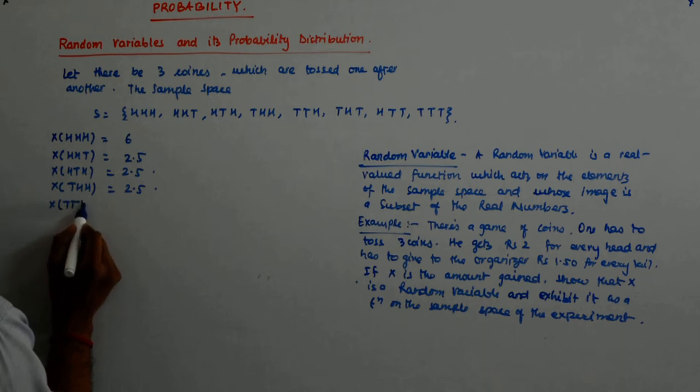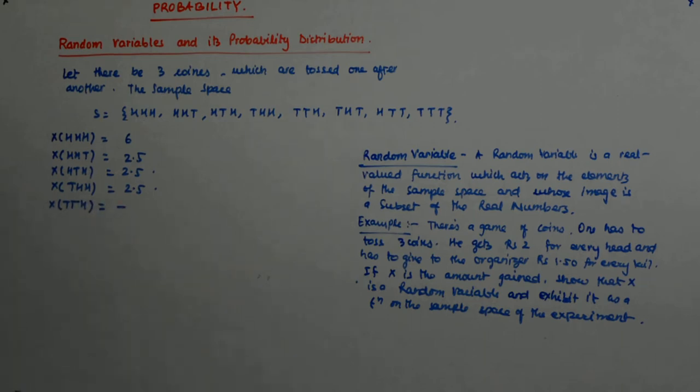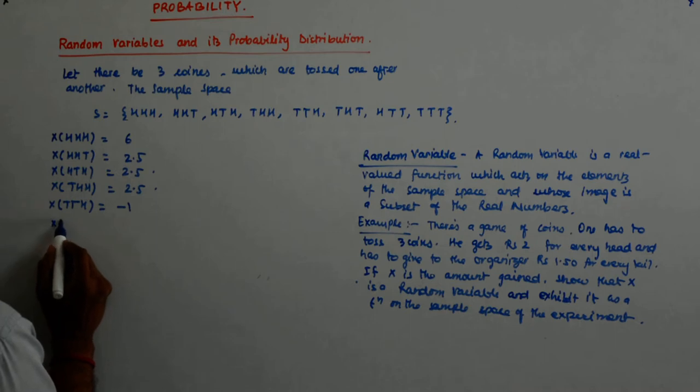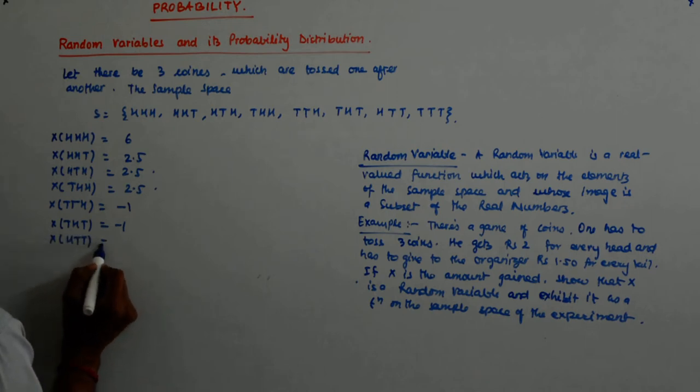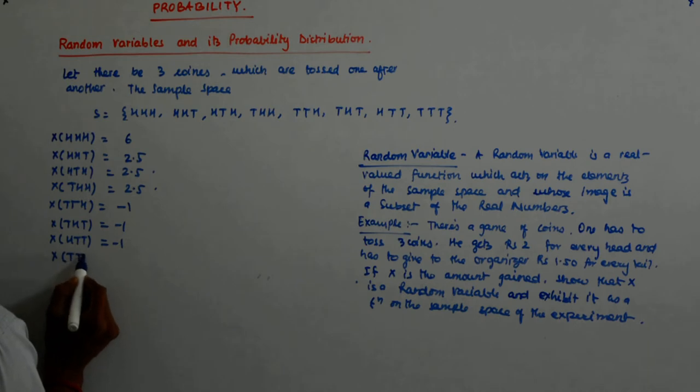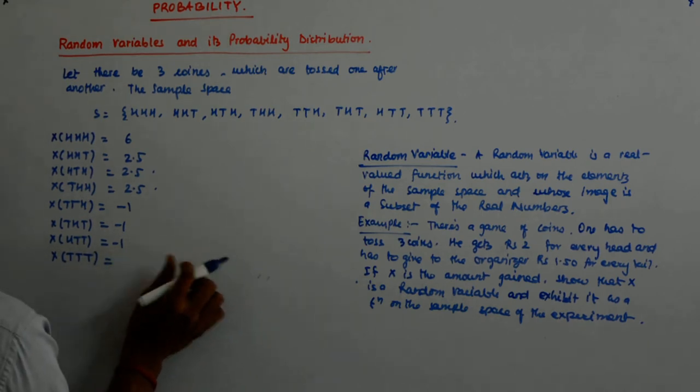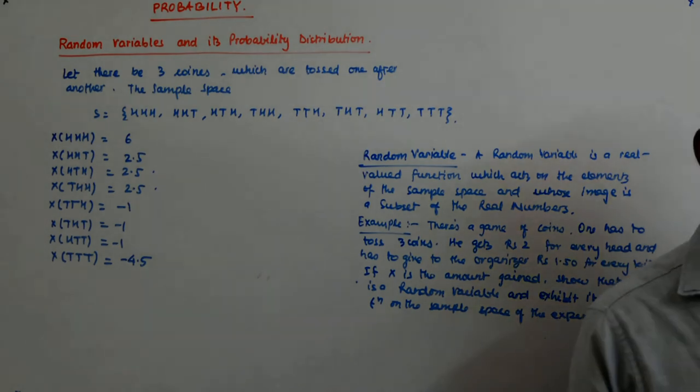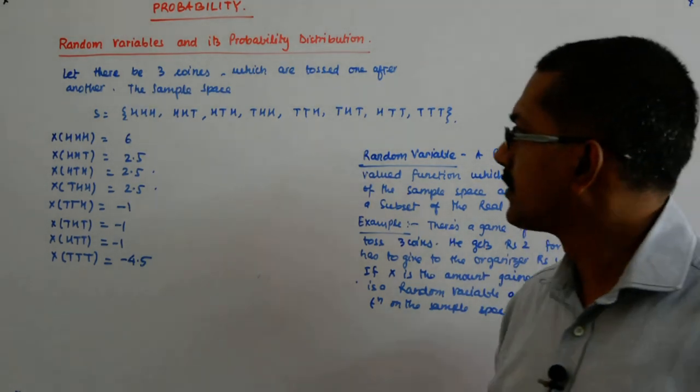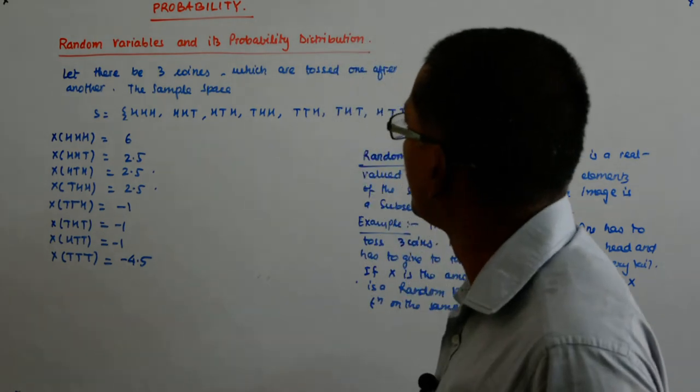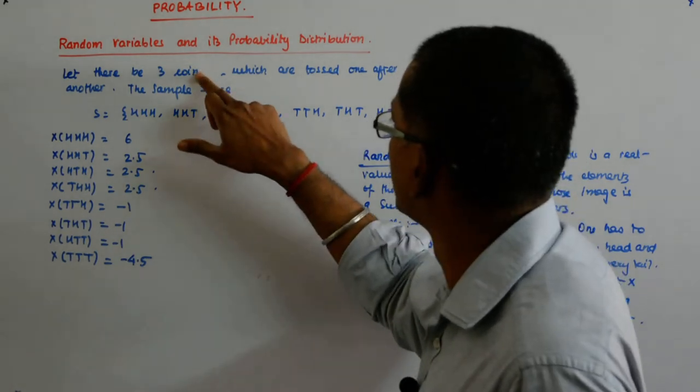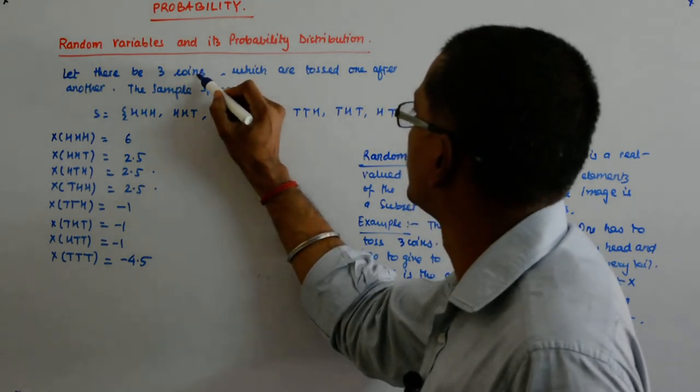X(TTH): loss. How much? Minus 1. X(THT): minus 1. X(HTT): minus 1. X(TTT): minus 4.5, sorry. Okay, thanks for correcting. Sorry for the mistake.